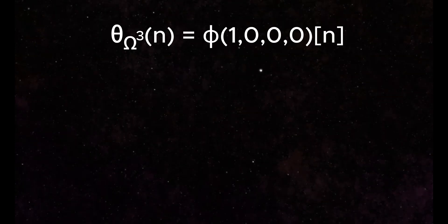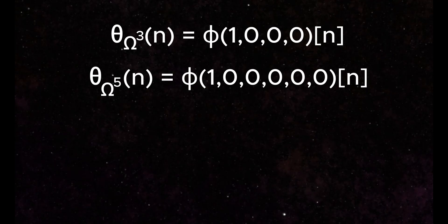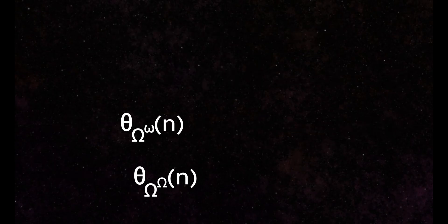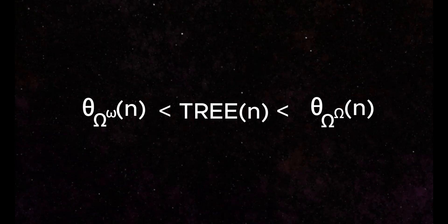Larger ordinals exist with fast-growing functions, including the small Veblen ordinal and the large Veblen ordinal. TREE lies somewhere between these functions.